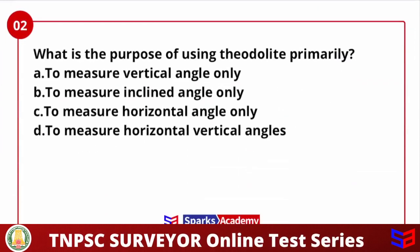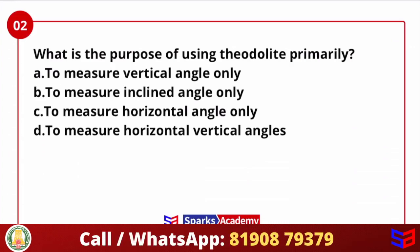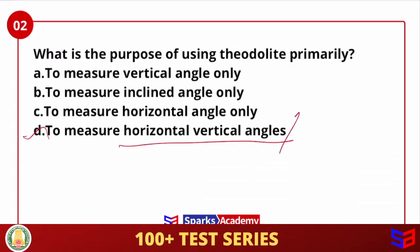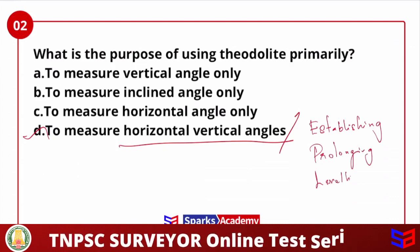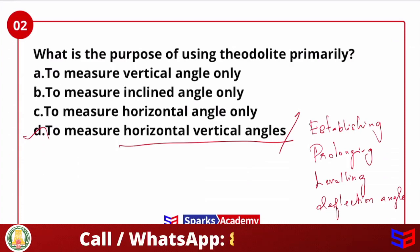Next question: What is the primary purpose of using a theodolite? Options are: to measure vertical angles only, to measure inclined angles only, to measure horizontal angles only, or to measure both horizontal and vertical angles. A theodolite can measure both horizontal as well as vertical angles. Along with that, it has objectives like establishing new survey lines, leveling, and calculating deflection angles.